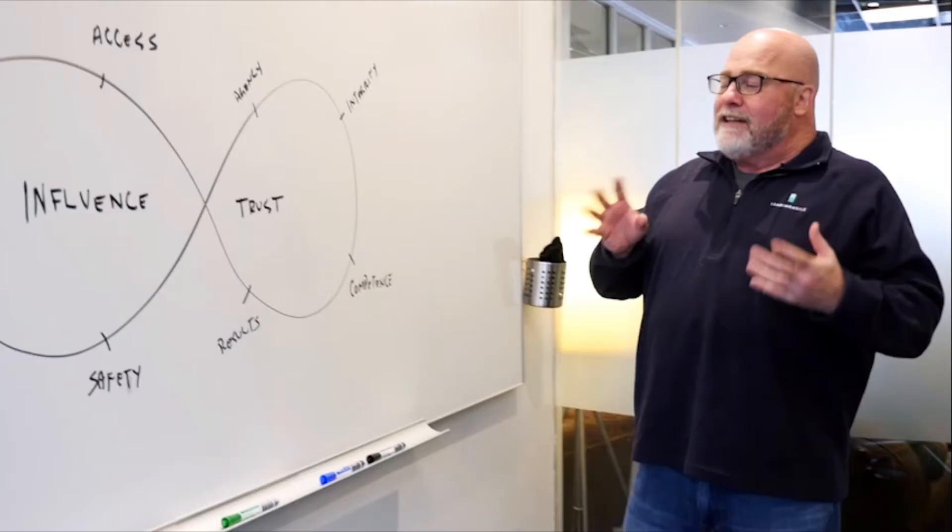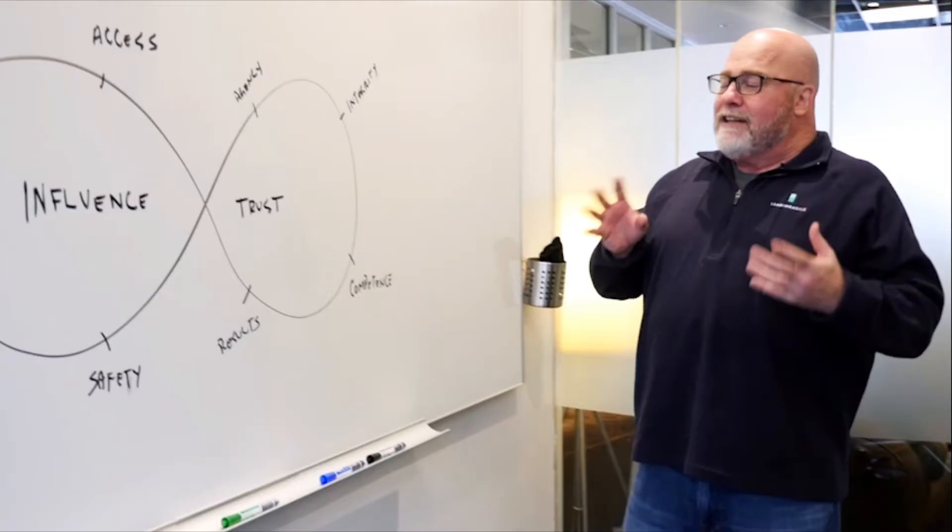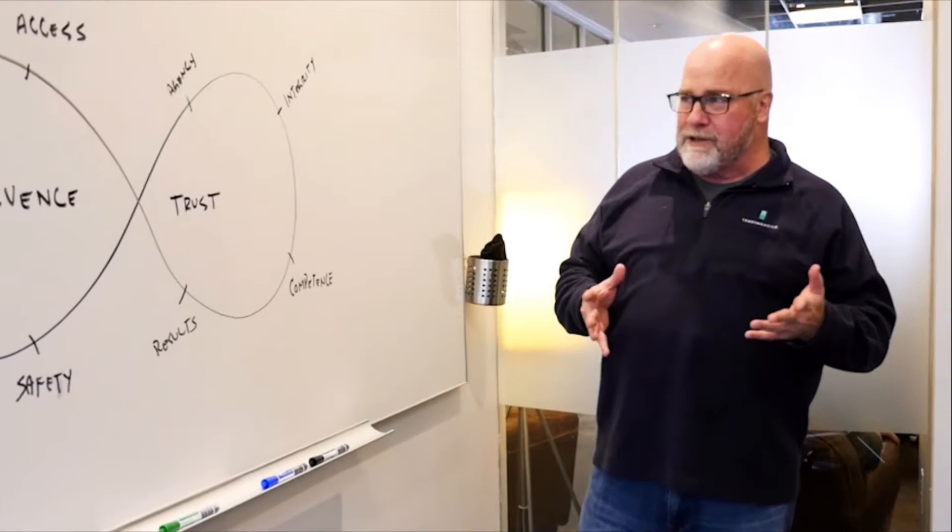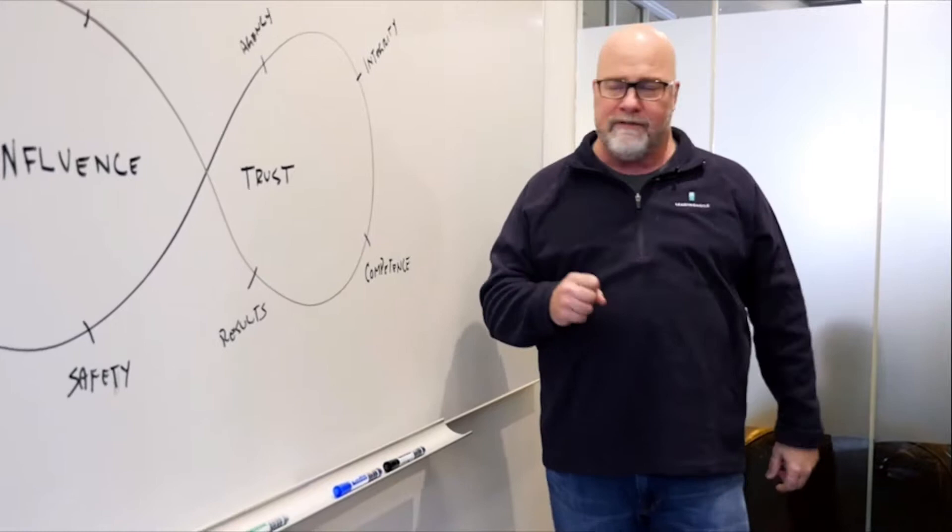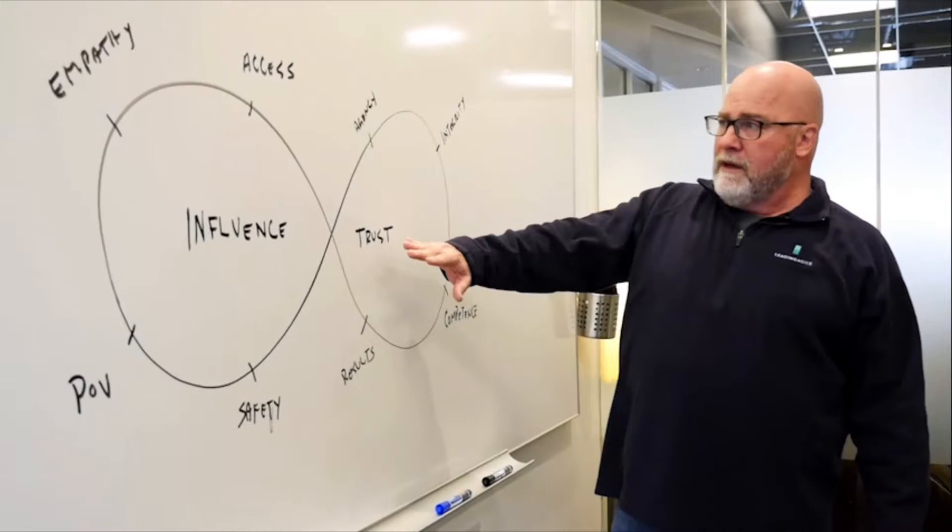Over time, we came up with this concept of an influence-trust loop. When we're looking at coaching engagements, if you're having these types of struggles - people feeling good but not getting results, or getting results but there's conflict in your organization - try to use this diagnostic to look at the interactions at different levels of the organization.